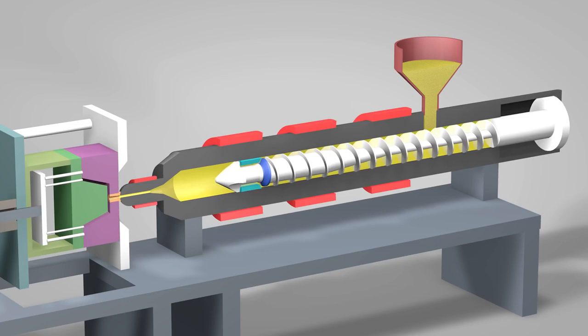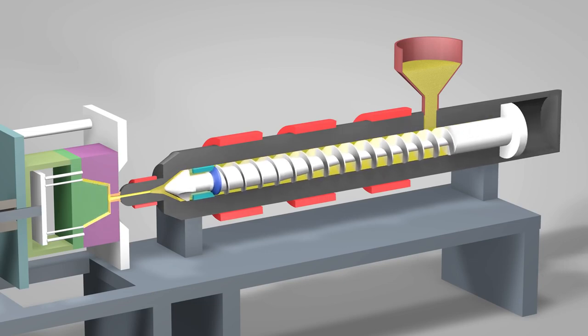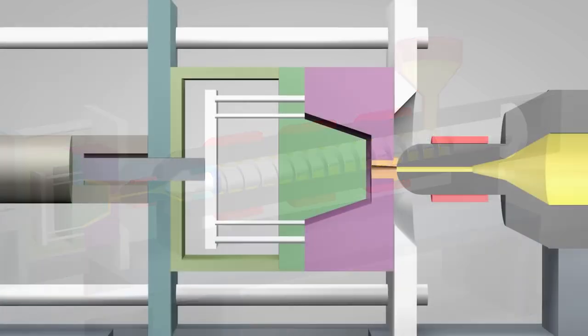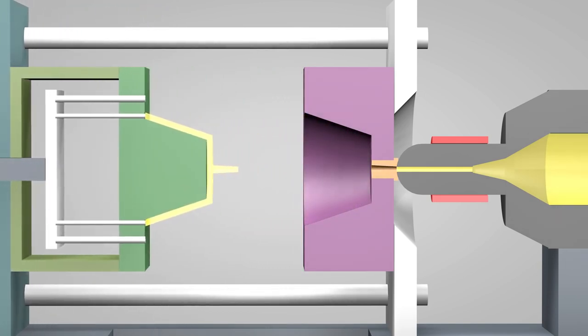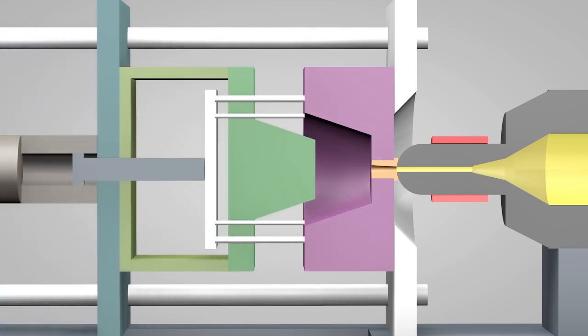Once enough molten plastic is in front of the screw, it ramps forward like the plunger of a syringe. In a matter of seconds, the screw injects the molten plastic into the empty part of the mold called the cavity image. The plastic solidifies in under a minute. The mold opens and the part is ejected. The mold then closes and the process repeats.